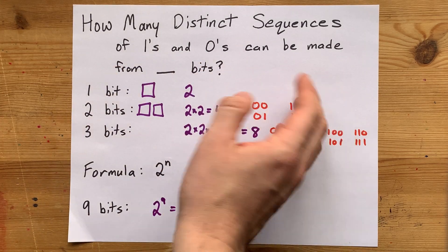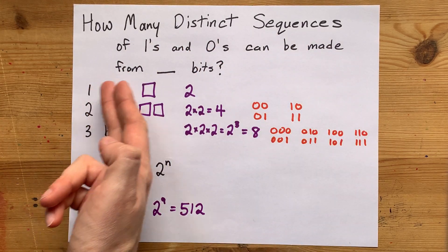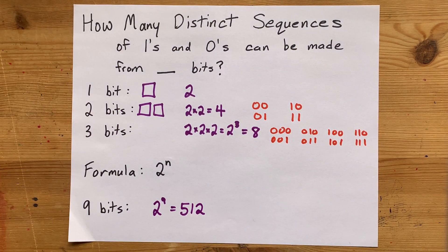Cool, thanks for being with me. This is how many distinct sequences of 1s and 0s can you make from a certain number of bits. Thank you for being with me, and best of luck.